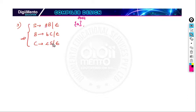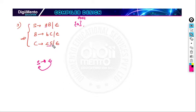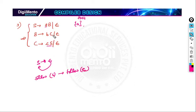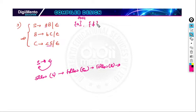Here, FOLLOW of S will be FOLLOW of C in this case, because there is nothing after S. Since S generates epsilon, whenever there is epsilon we have to find FOLLOW of the left-hand side. S is present in this production, and after S there is nothing, so we find FOLLOW of C. After C there is nothing, so FOLLOW of C is FOLLOW of B. After B there is nothing, so FOLLOW of S is simply dollar.